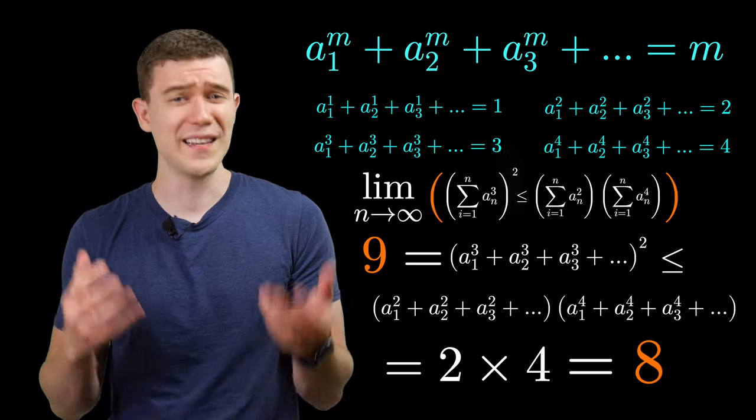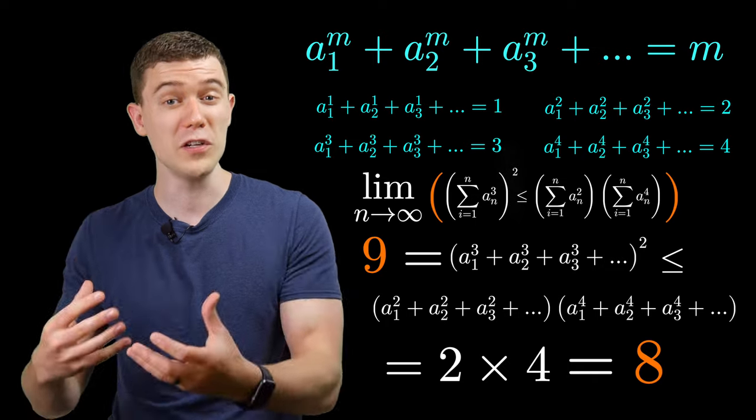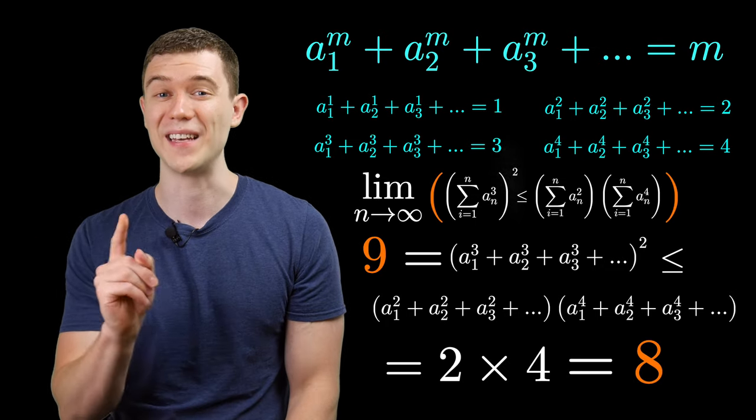And so nine is less than or equal to eight? I don't think so. That's a contradiction, meaning the original proposed infinite sequence cannot exist.